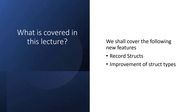Immutable properties can be created by using positional parameters or standard property syntax. We will now switch over to Visual Studio 2022, which supports .NET 6, because C# 10 is only available in .NET 6.